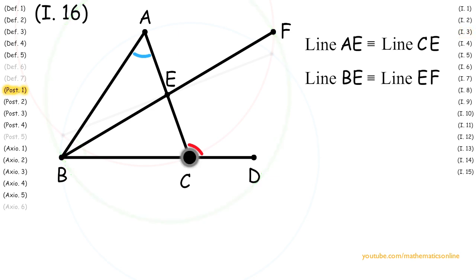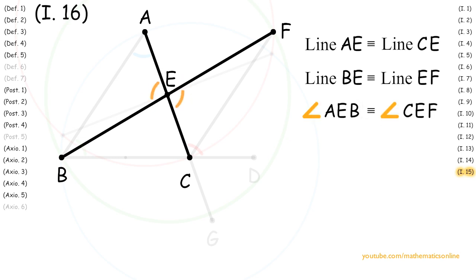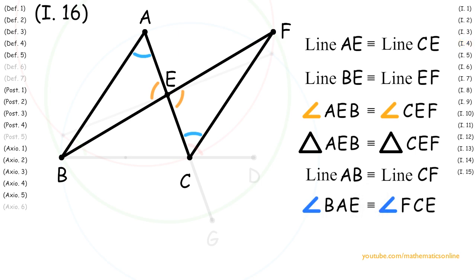Next we create line CF and we extend line AC with point G. Now looking at the intersecting straight lines BF and AC, we can see that by Proposition 15 the vertical angles AEB and CEF are congruent. Since triangle AEB and triangle CEF both share a corresponding side, angle, and side, then by Proposition 4 triangle AEB is congruent to triangle CEF. Therefore line AB is congruent to line CF and angle BAE is congruent to angle FCE.